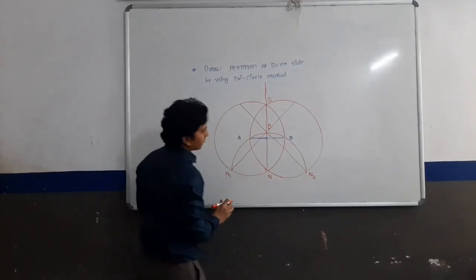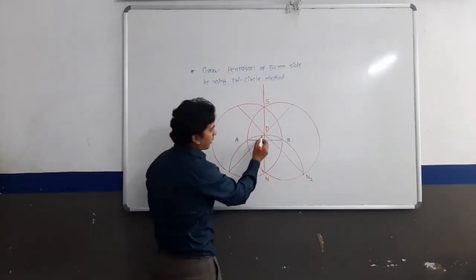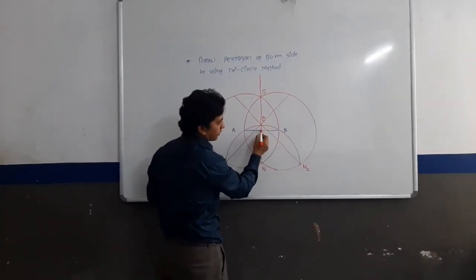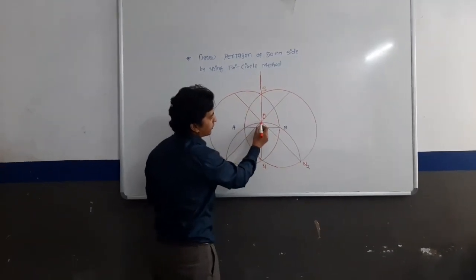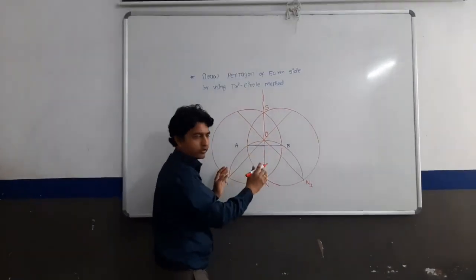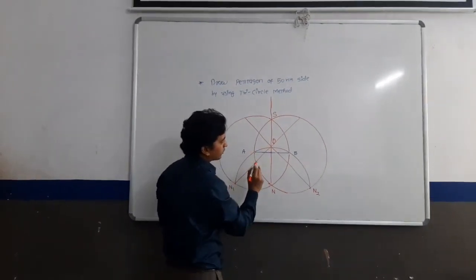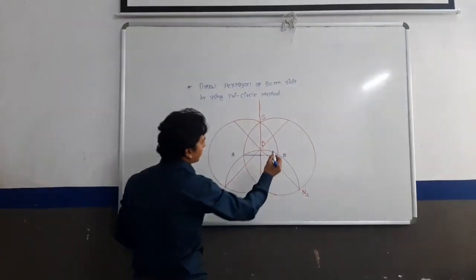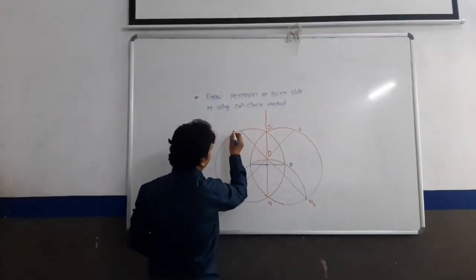If you have to do this with the tri-circle method, you would have to take the intersecting points. I see C and E.